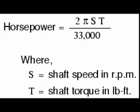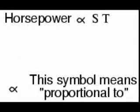The horsepower value only changes with speed and torque, nothing else. We can rewrite the equation to show this relationship: horsepower is proportional to shaft speed in rotations per minute multiplied by torque in pound-feet. Because the unit of horsepower doesn't coincide exactly with RPM multiplied by torque in pound-feet, we can't say horsepower equals s times t. However, they are proportional to one another. As the mathematical product of s times t changes, the value for horsepower will change by the same proportion.